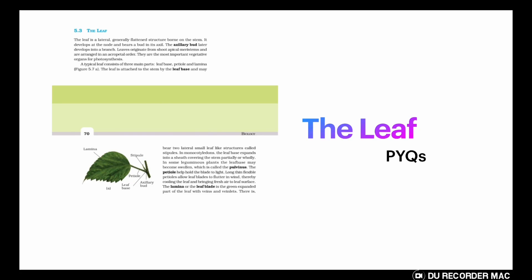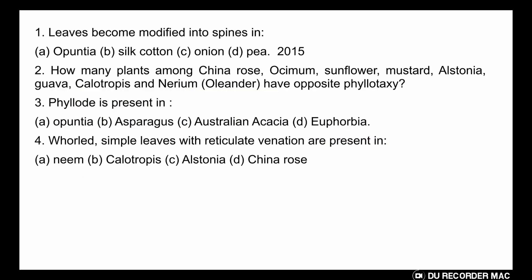Hello everyone, in this video we will discuss the leaf. The first question is: leaves become modified into spines in which of the following? The answer here will be opuntia. In xerophytic plants, the leaves modify into sharp pointed spines.